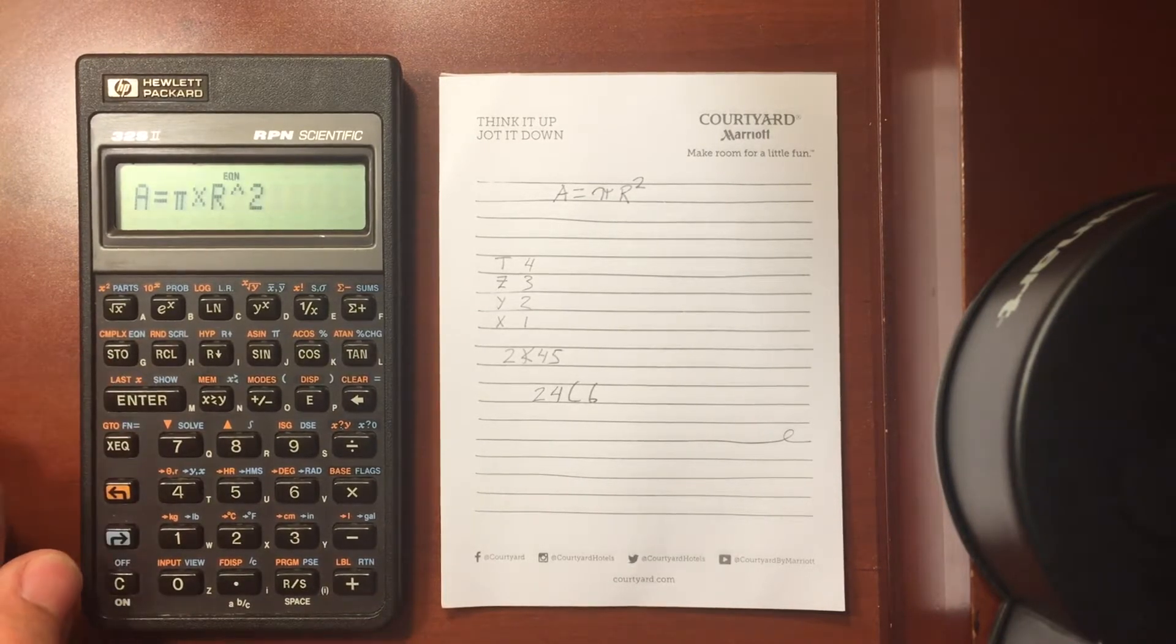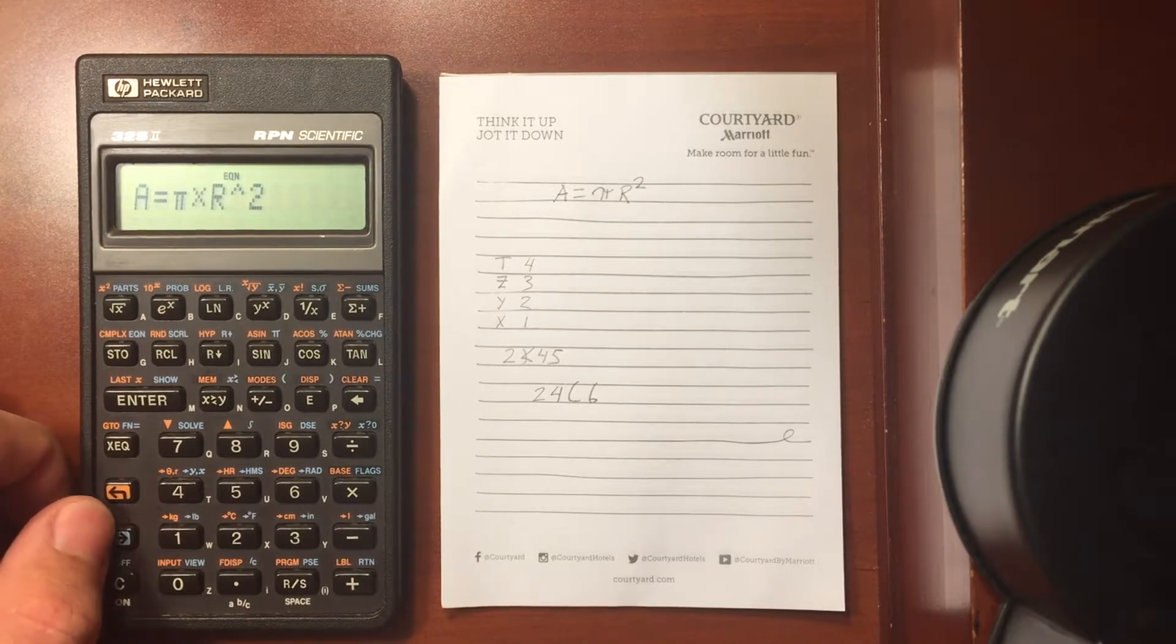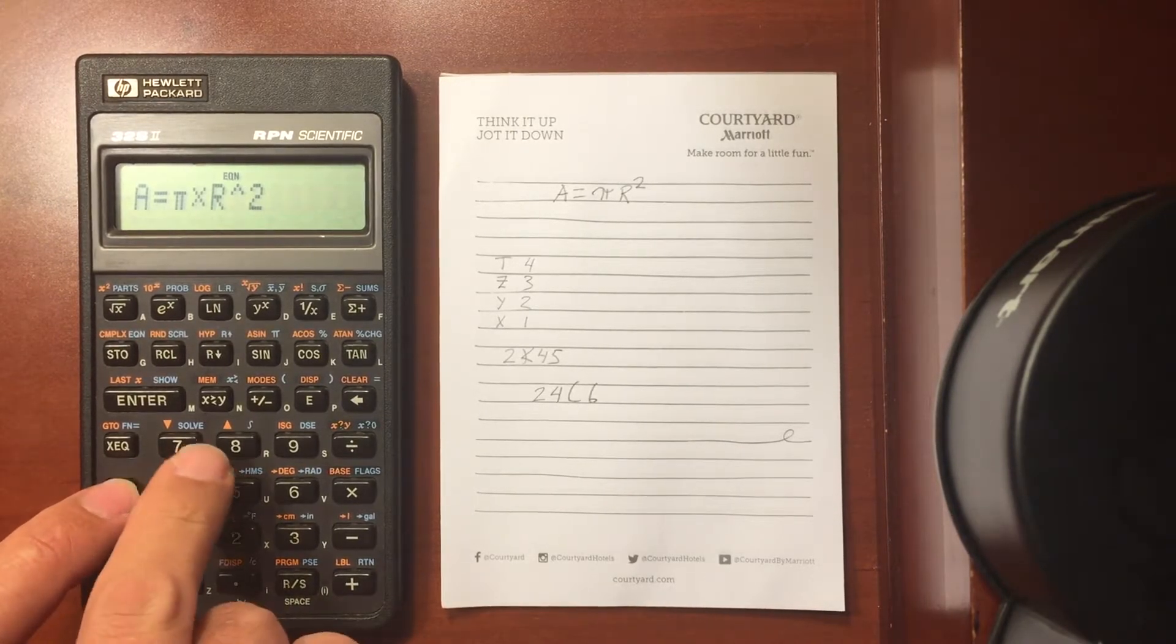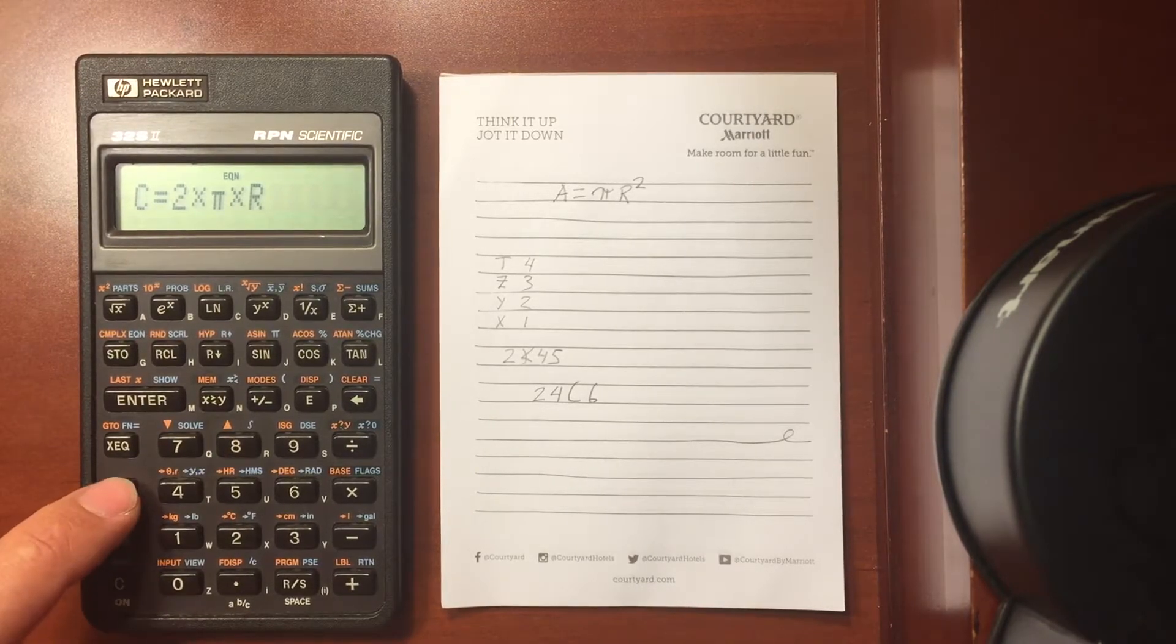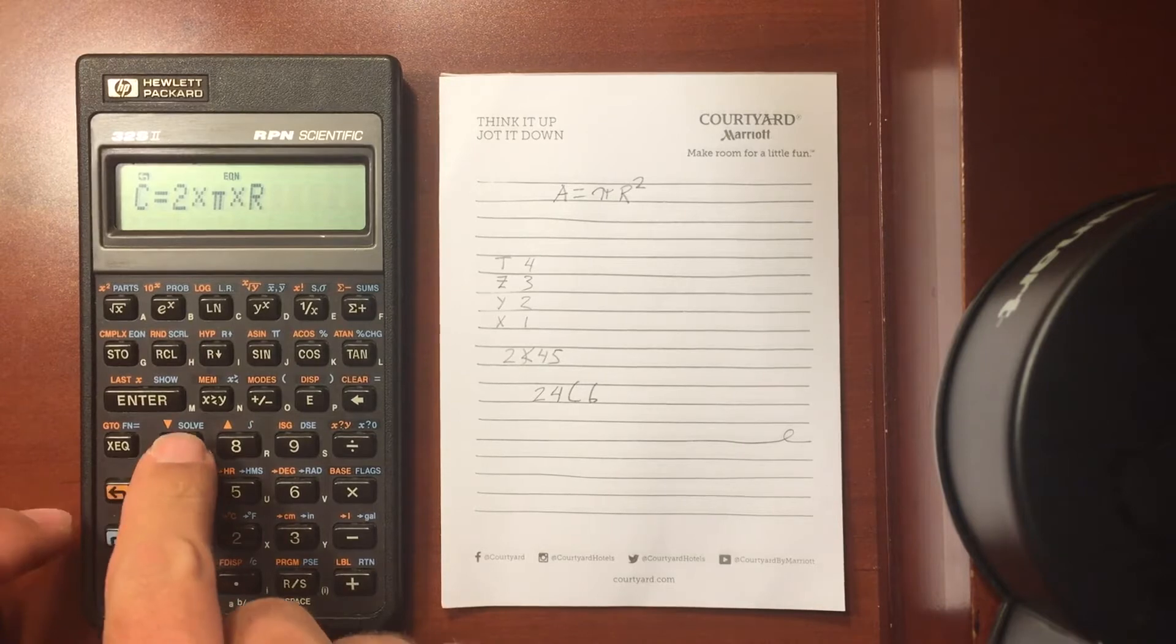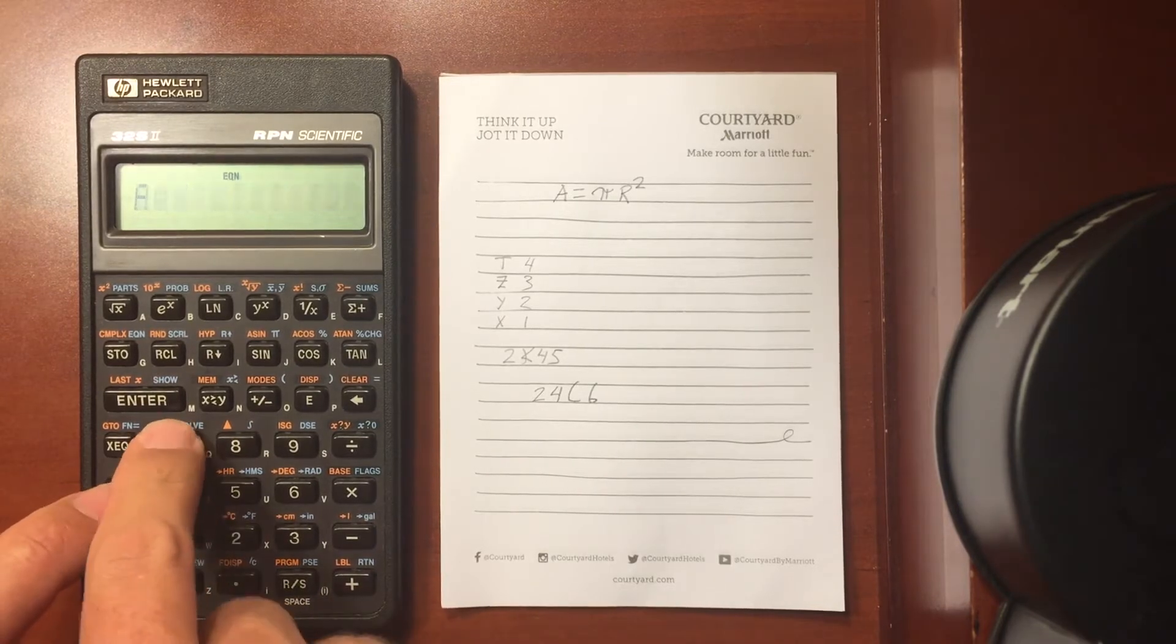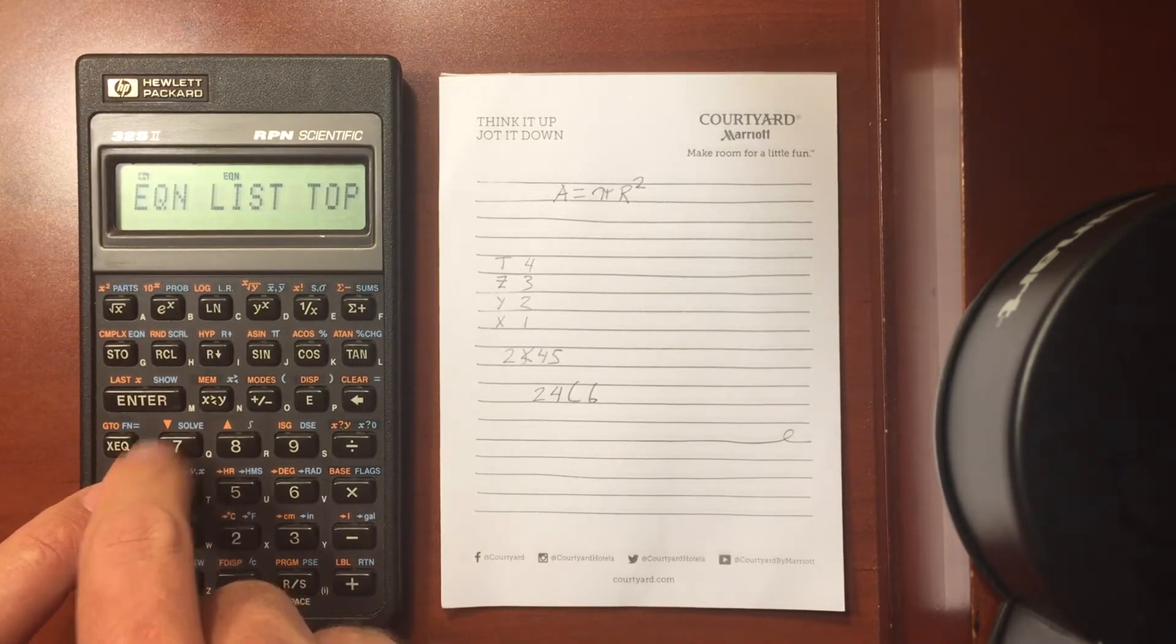Go back to my equation list. I have two equations entered currently. I can scroll through them by using the shift and then the up and down buttons. So that's the circumference of a circle. Go back to the top of my list. I can scroll down through the equations that I have.